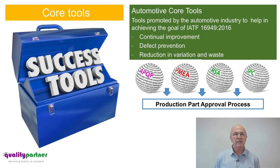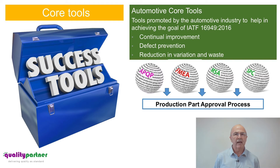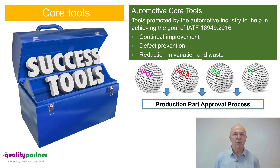The tools that we're going to take a look at today are advanced product quality planning, which is known as APQP, failure mode and effect analysis FMEA, measurement system analysis MSA, and statistical process control SPC. These all culminate into a document called the production part approval process, which is known as PPAP.